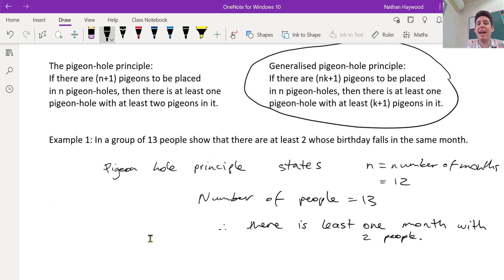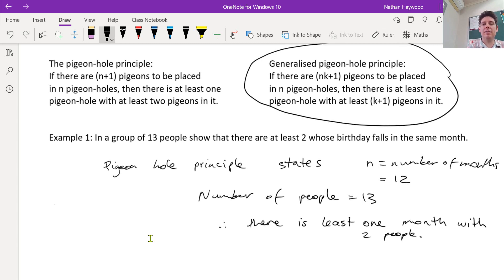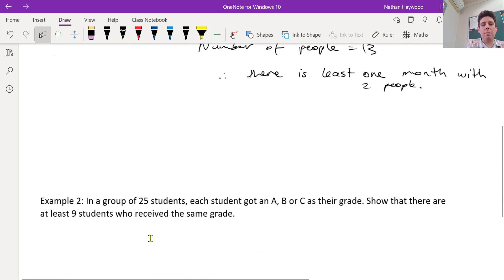So if there are nk plus one pigeons to be placed in n pigeonholes, then there has to be at least one pigeonhole with k plus one pigeons in it. Now, that probably just looks like jumbled mess. I'll show you what I mean.